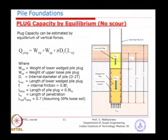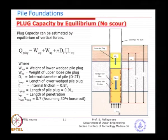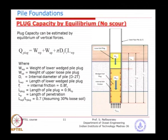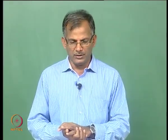When you add up all of them together, that will be the plug capacity for the bottom. If you have a higher plug capacity because the soil is very good at the bottom, that does not mean you can take it — because when you have an end bearing of higher capacity, the soil plug will start to move, meaning the plug will fail before the pile fails. So this is the limiting capacity basically when there is no scour.